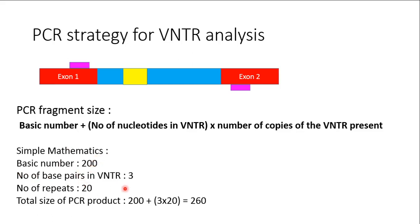For example, if the basic number is 200, the number of nucleotides in the VNTR repeat unit is 3, and there are 20 copies, then the product size would be 200 + (3 × 20) = 260.